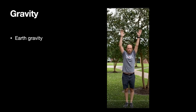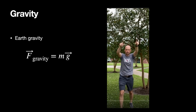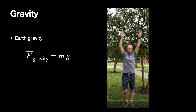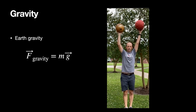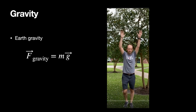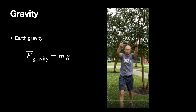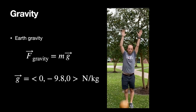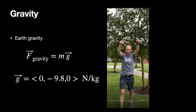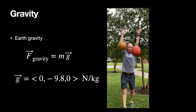The first is Earth gravity. On the surface of the Earth, we use this model for the gravitational force: the gravitational force equals the mass of an object times little g. G is a vector called the gravitational field — it's in the negative y direction. Some people write negative mg, which is the y component of the gravitational force. We can calculate the gravitational force.